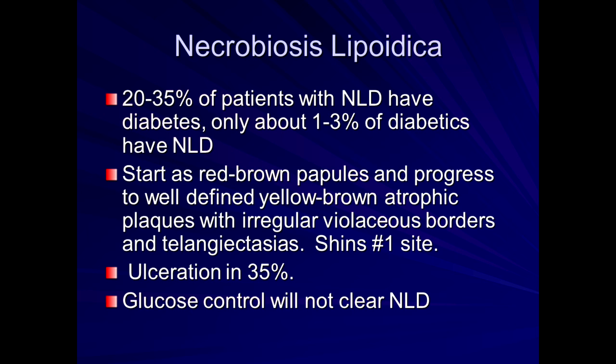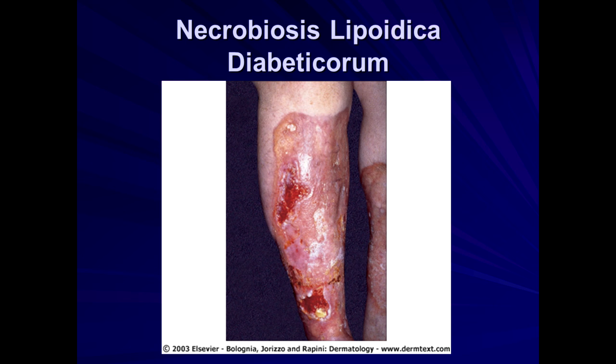For many of these skin conditions with diabetics, the assumption might be: let's get glucose under control and that will help the skin lesions resolve. Unfortunately, it doesn't correlate that way — these lesions can persist even in well-controlled patients. This is NLD: atrophic, even ulcerated plaques. The reason this is important to identify is that many times patients have been treated numerous times with antibiotics, assumed to have persistent staph infections. They go to infectious disease, they're on IV antibiotics, nobody can clear them up. In fact, this is a non-infectious etiology.